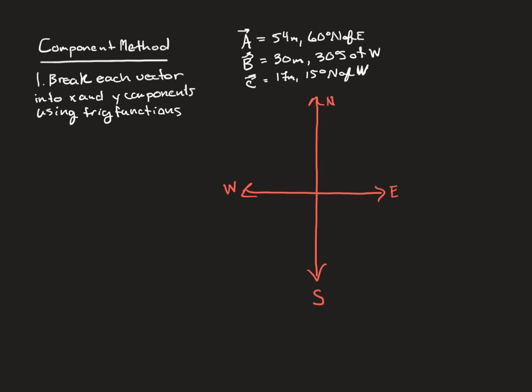I'm going to walk you through an example problem using the component method, and then I'll post an additional video with another example you can work on. We have three vectors to add together: vector A has a magnitude of 54 meters at 6 degrees north of east; vector B is 30 meters at 30 degrees south of west; and vector C is 17 meters at 15 degrees north of west. Our goal is to determine what A plus B plus C is.